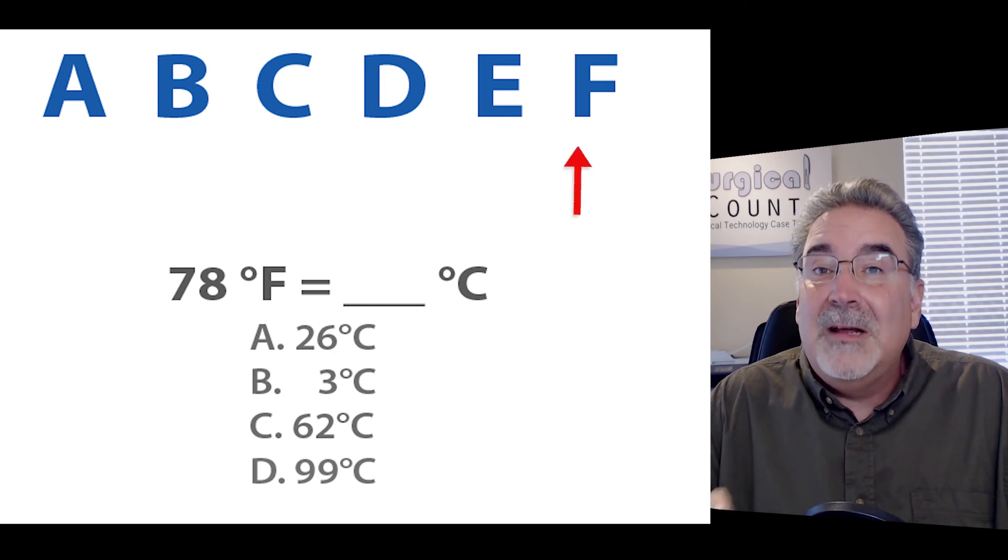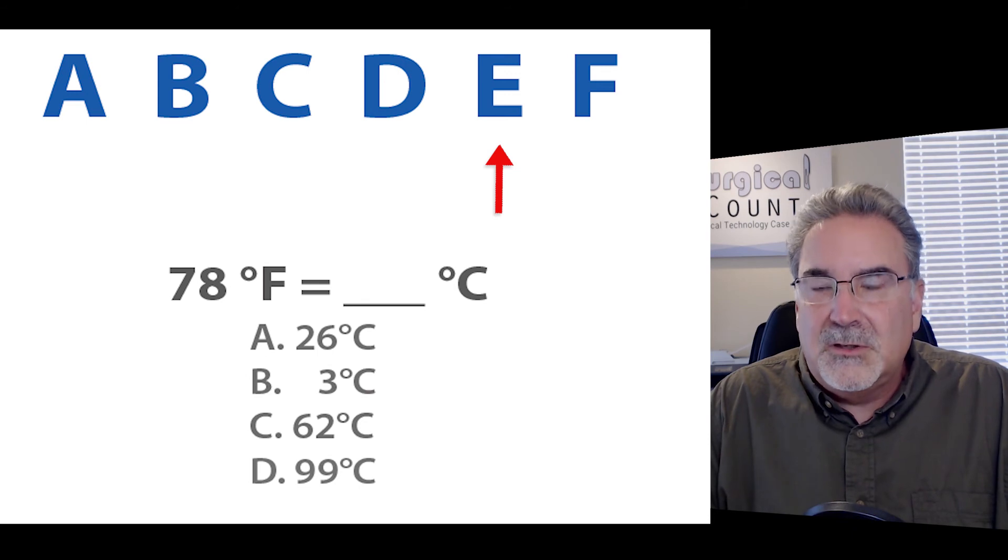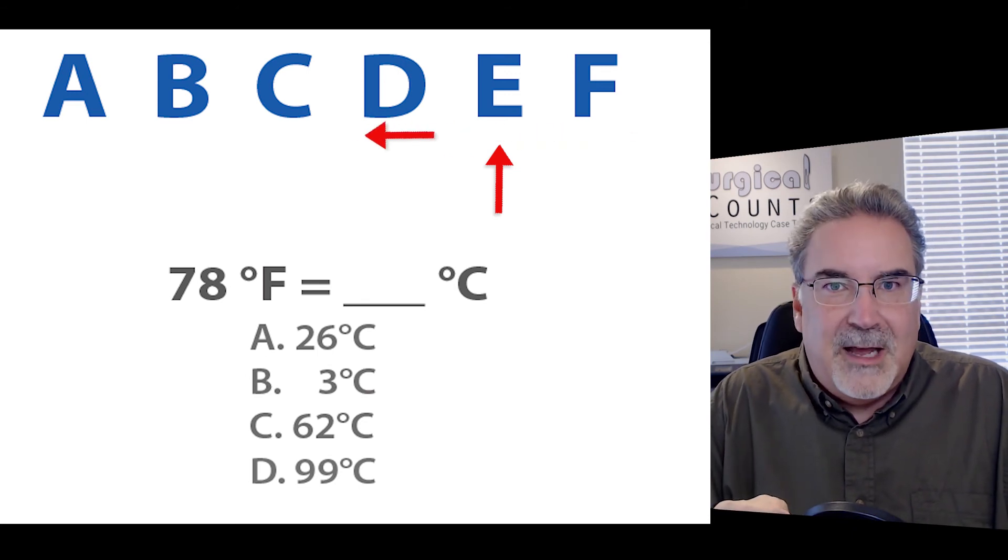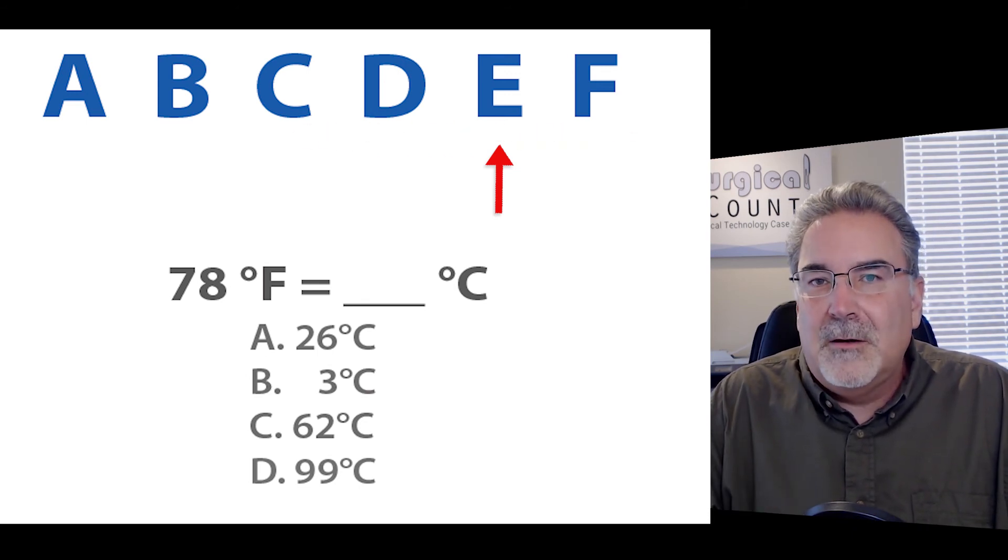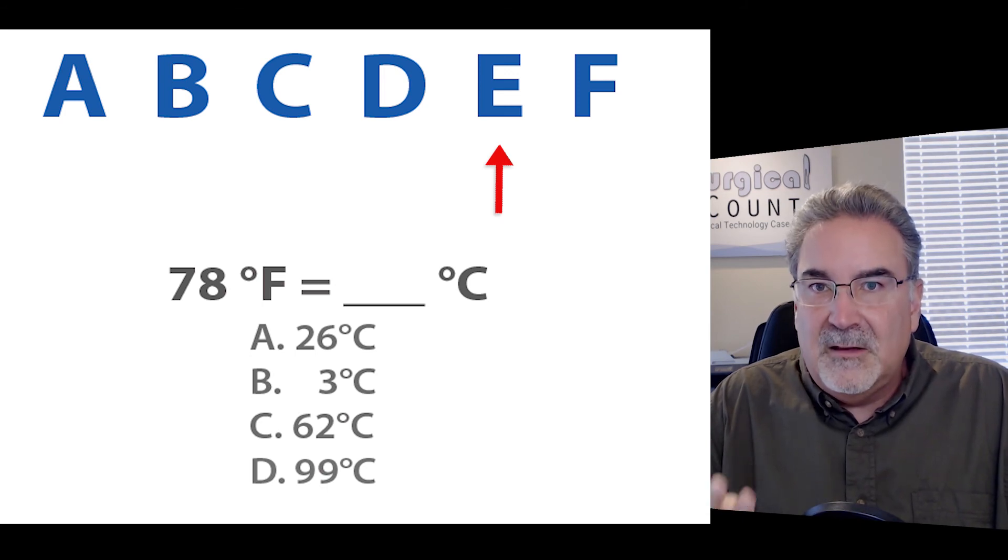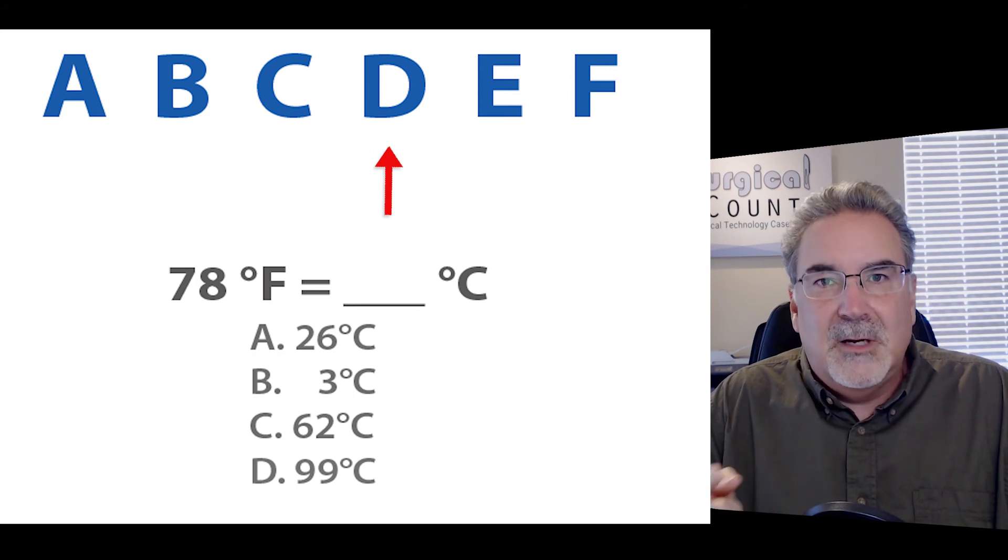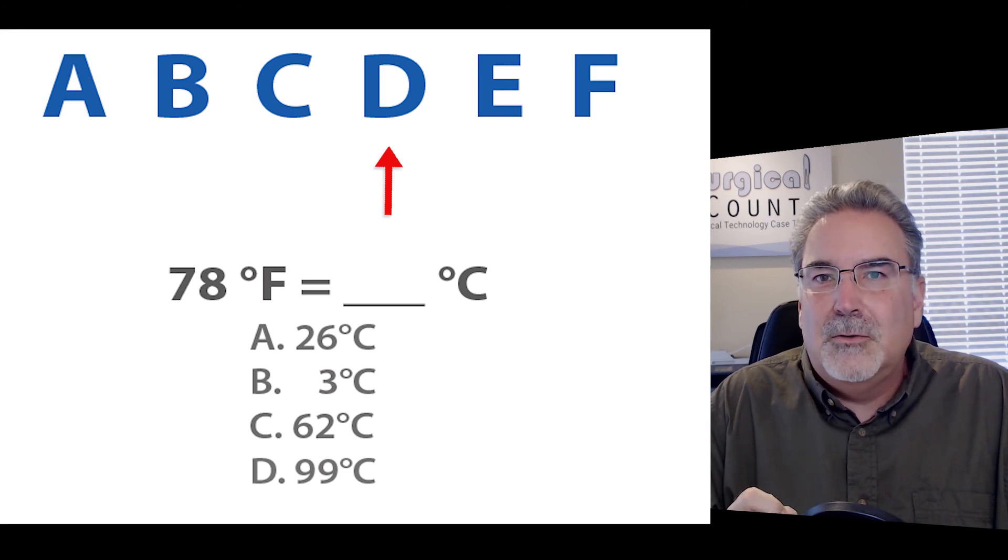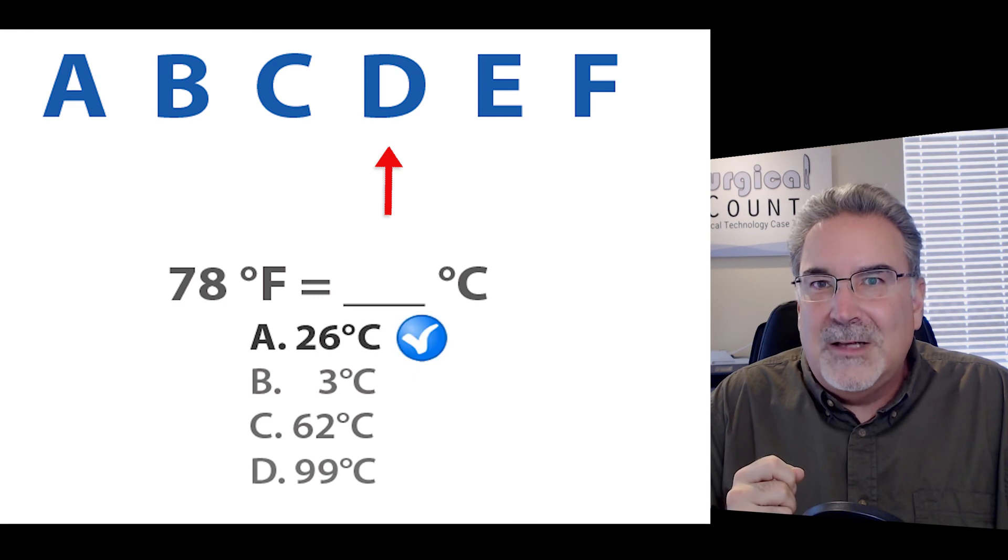So we're going to go from F down the scale to E. E reminds us of 3, which is 30. And because we're going down the scale, we're going to subtract 30. So 80 minus 30, 70, 60, 50. Okay, so we're at 50. Then we come to a D. Do we double or divide? We're going down the scale. So we're going to divide 50 divided by 2 is 25. And what are our answers? 26 is really close. And in fact, that's the right answer.